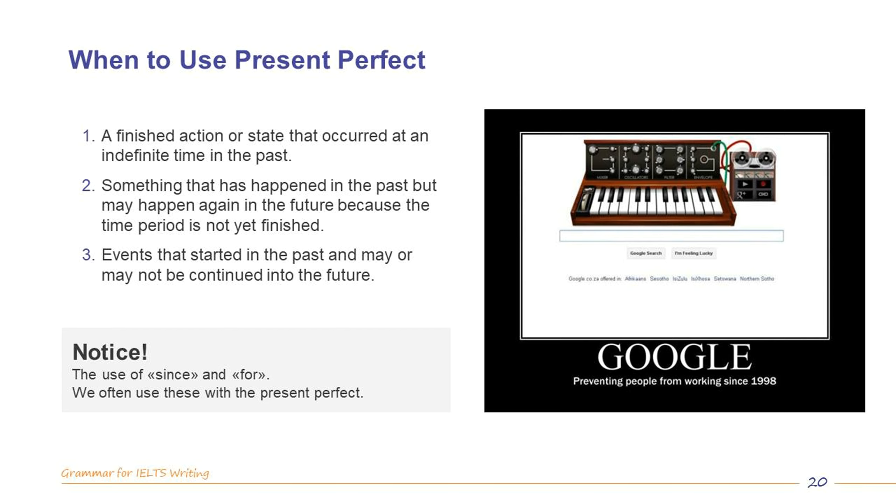Notice the use of since and for. We often use these with the present perfect. For is followed by a period of time: for five months, for two days, etc. And since is used to refer to a point in time: since last Friday, since 1998, and so on.